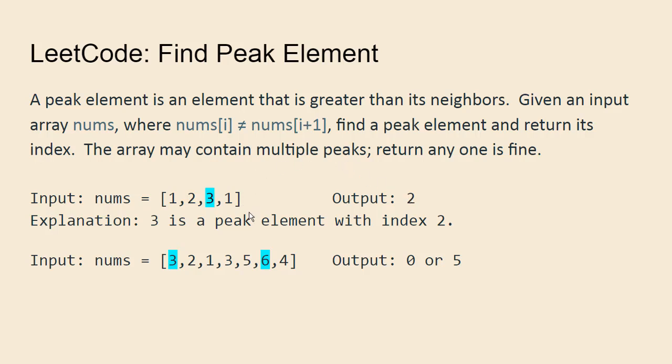Look at the second example. This array has two peak elements. Six obviously is one peak element; it is the largest element in the array. It's greater than five and four.